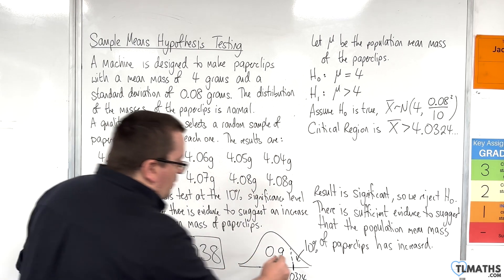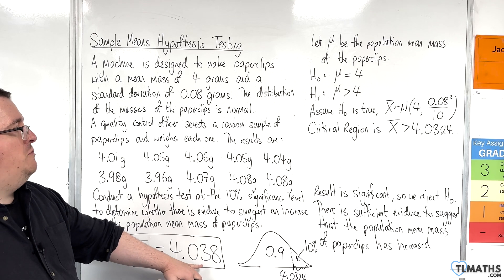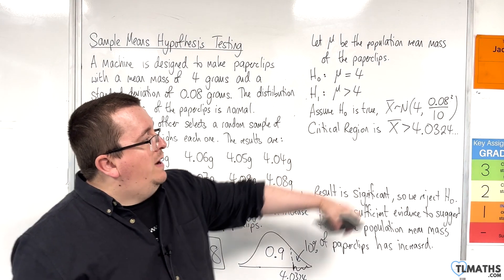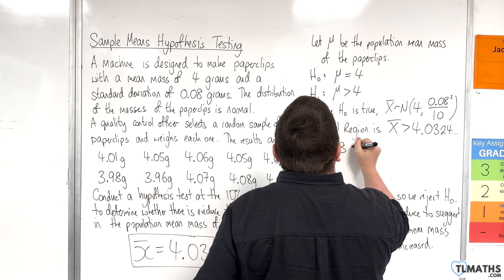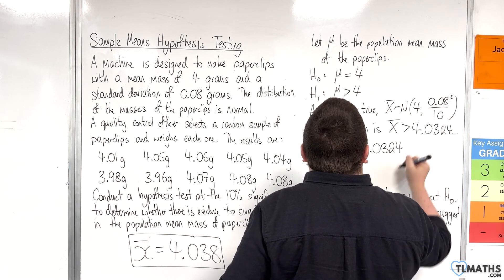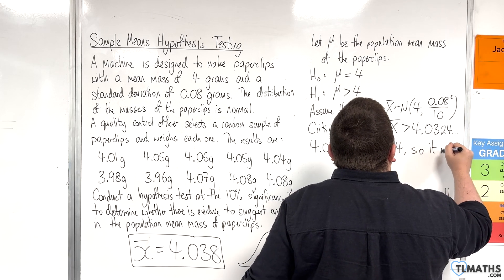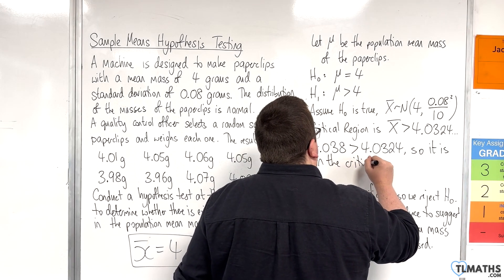Our value, and that's the critical region, our value was 4.038, which is greater than that value. So, 4.038 is greater than 4.0324, so it is in the critical region.